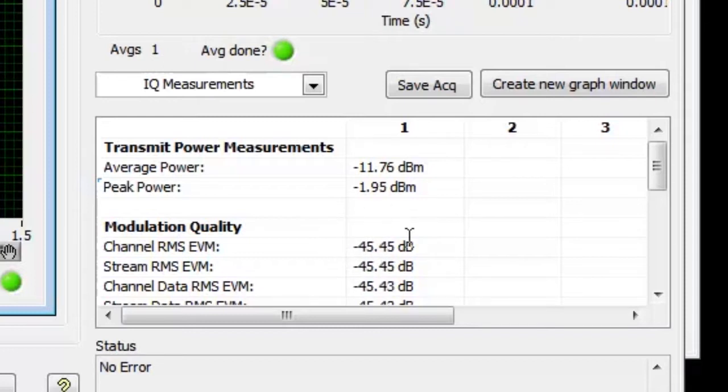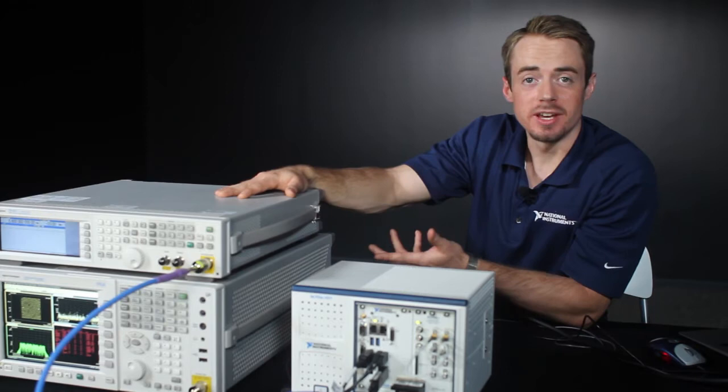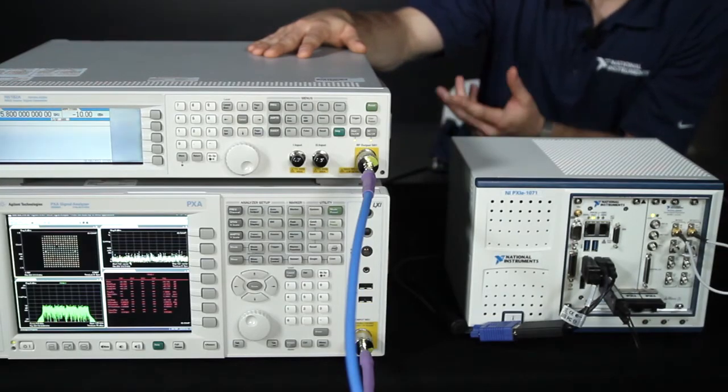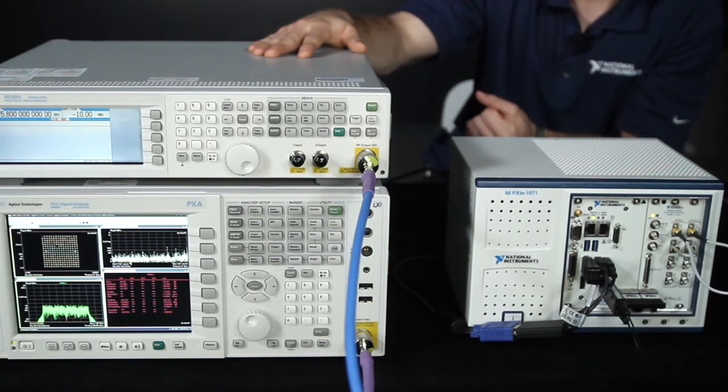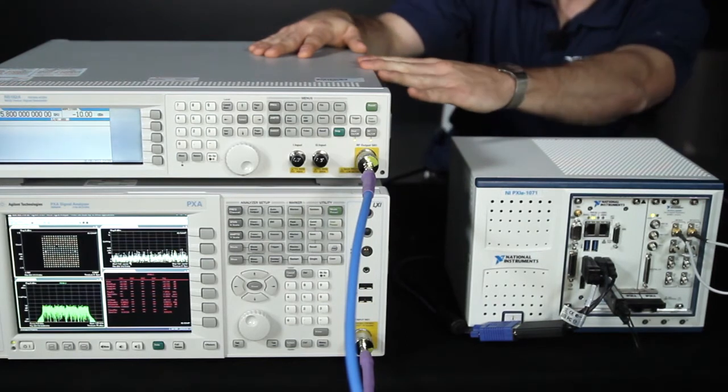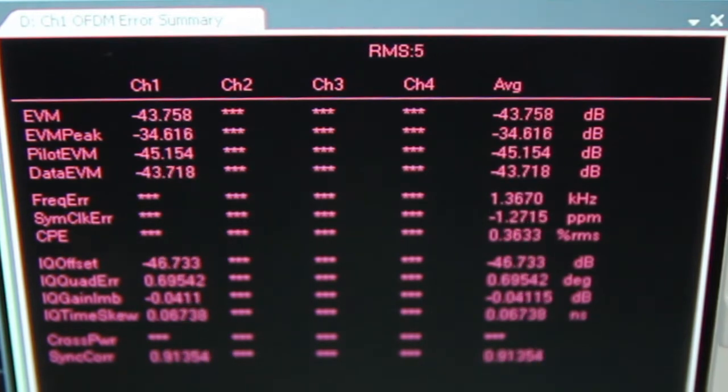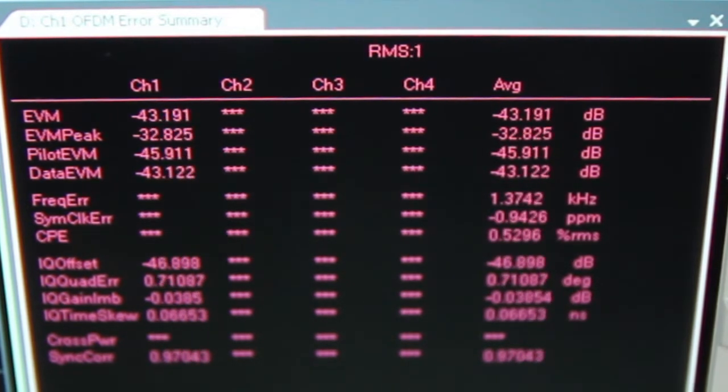Now let's see what this would look like in a traditional box setup. Here we have a similar setup with the Agilent MXG generating an 802.11ac, 80 MHz bandwidth, 256-QAM signal to the Agilent PXA, and we can see that they're measuring minus 44 dB, which is 2 dB worse than what the Vector Signal Transceiver measures.